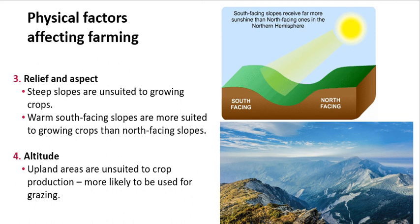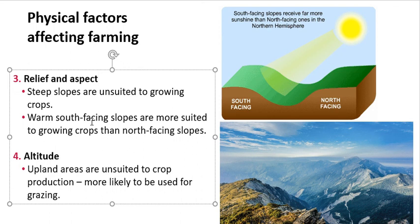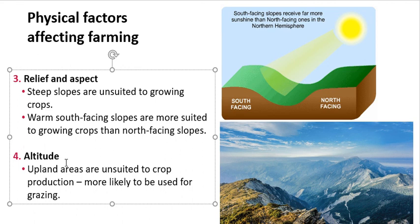Number three is relief and aspect. Relief refers to the lie of the land — whether it's flat, hilly, or sloped. For farming, you want flat land, because steep slopes are unsuitable for growing crops or keeping animals and are very difficult to drive a tractor or combine harvester on. Aspect refers to the direction your fields are facing. In Ireland, being north of the equator, you want south-facing fields as they get the most sunlight and are better for growing crops.